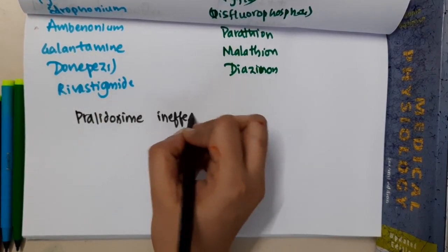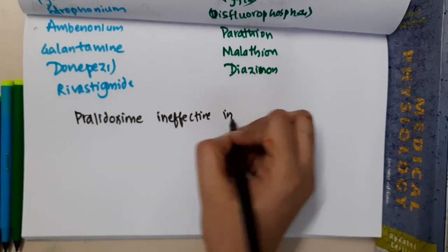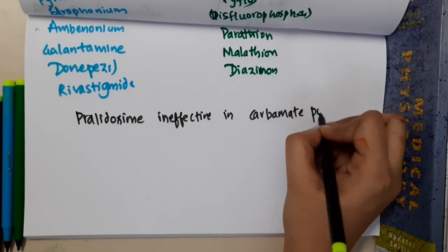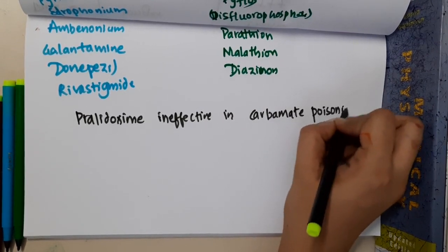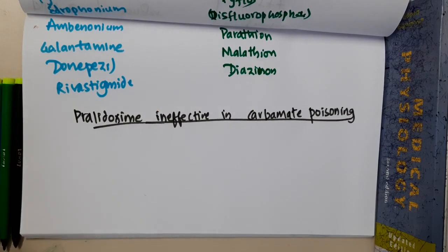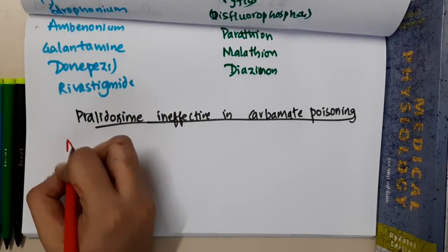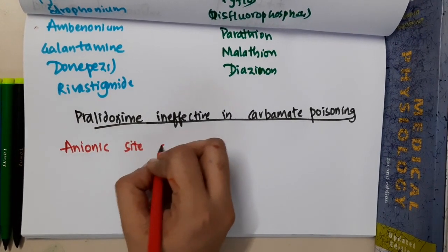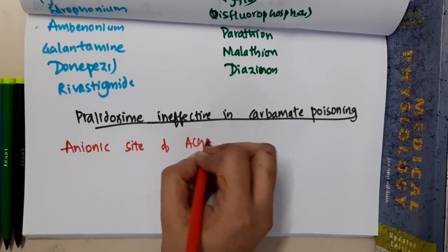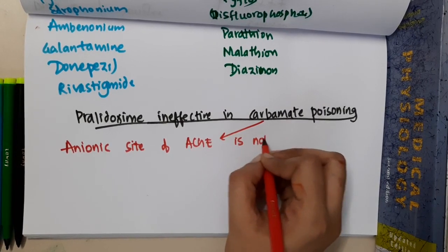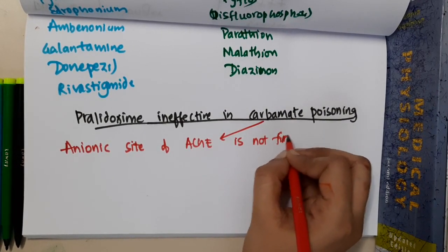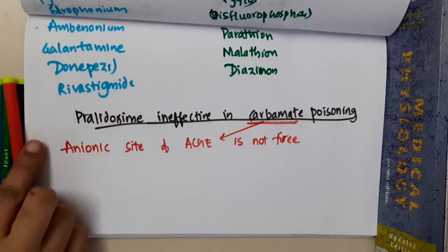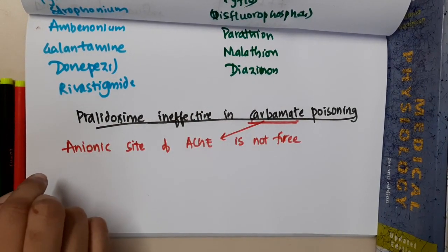Why is pralidoxime ineffective in carbamate poisoning? In carbamate poisoning, carbamate binds to the anionic site of acetylcholinesterase. As a result, the anionic site is not free, so pralidoxime cannot bind to it — and therefore pralidoxime is ineffective.